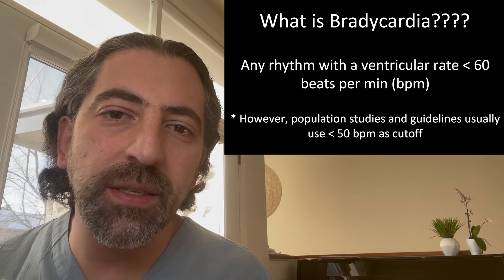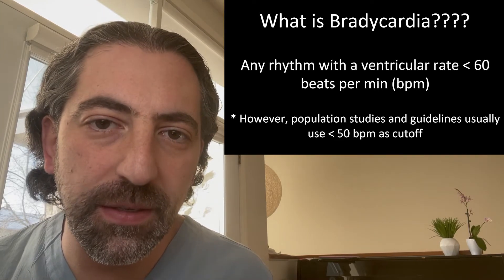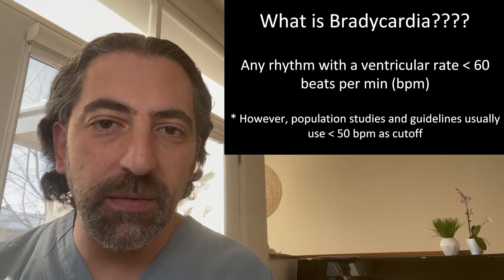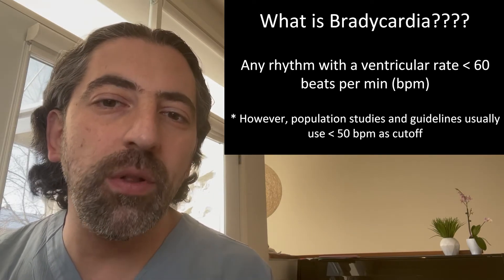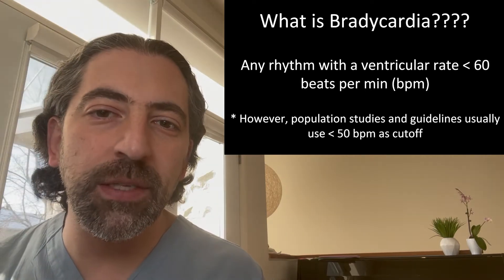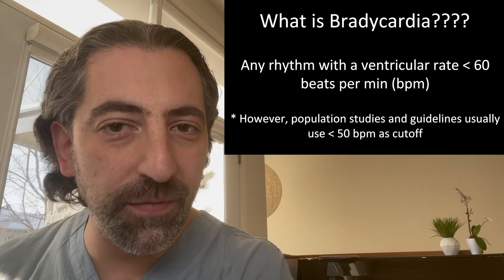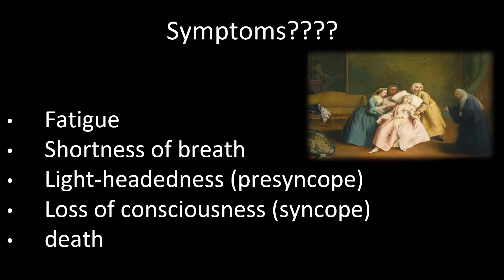When somebody has a low pulse of less than 50 to 60 beats per minute, they may start developing symptoms. Whether they develop symptoms or not will depend on their general health, other comorbidities, and the actual heart rate. Somebody with a heart rate of 15 to 20 beats per minute is more likely to be symptomatic than somebody with a heart rate of 45 to 50 beats per minute. These symptoms include fatigue, shortness of breath, lightheadedness or presyncope, loss of consciousness or syncope, or potentially death.